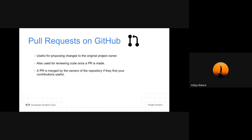If he doesn't like your code, he'll basically close the pull request and say he doesn't want this to be a part of his project. That's what pull requests are. Let's see how to fork and make pull requests.